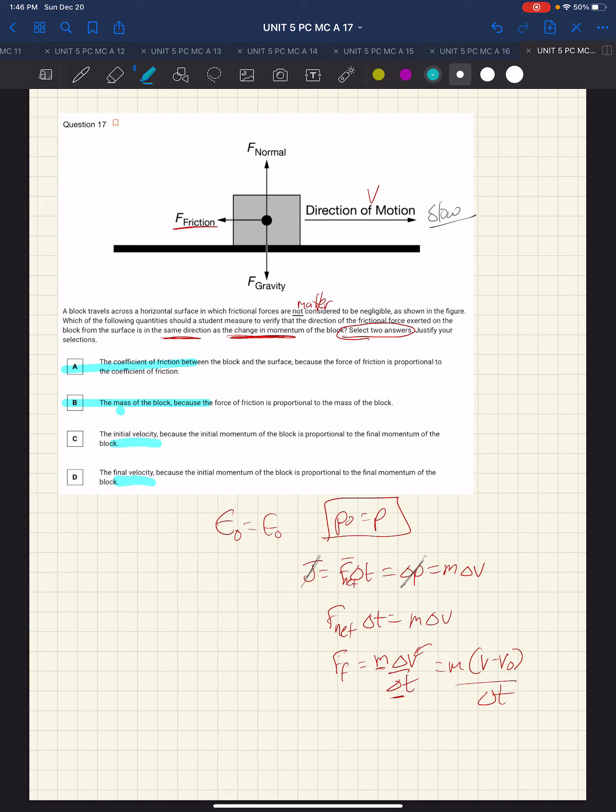It's only in choices C and D that we're getting some mention of the velocity. We're looking for two choices, and that is why C and D are the correct choices.